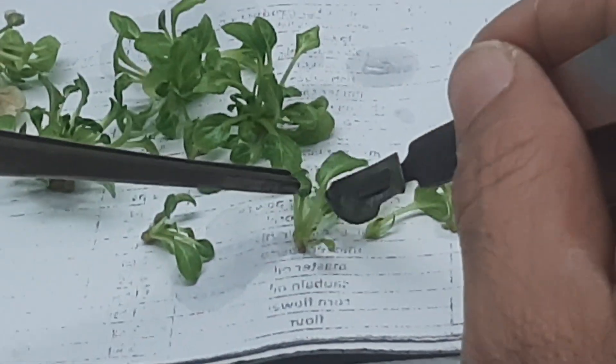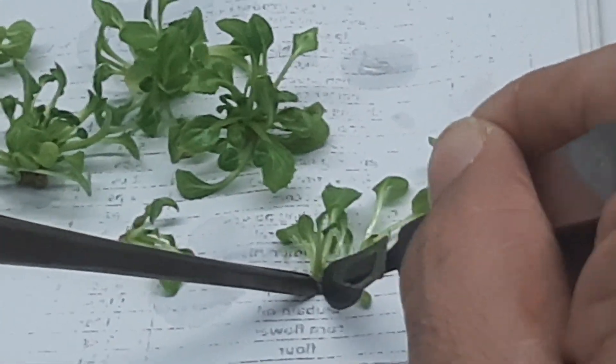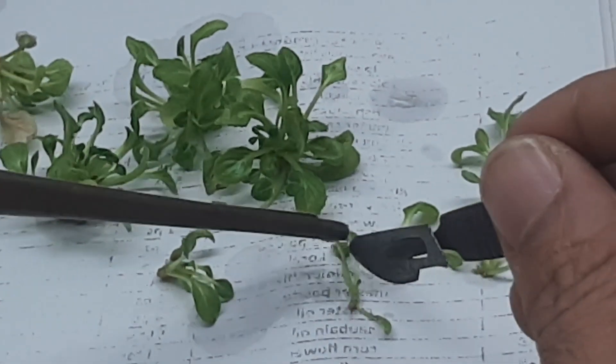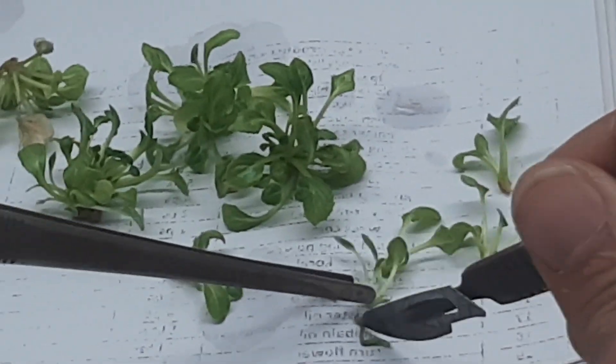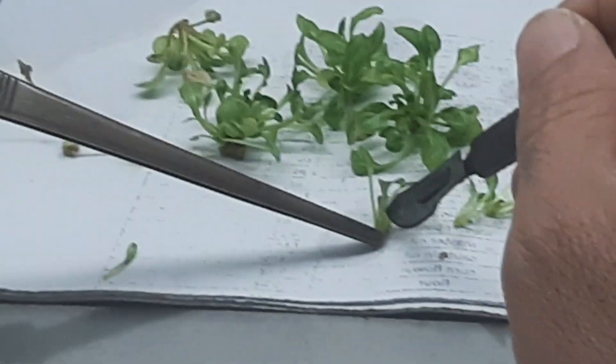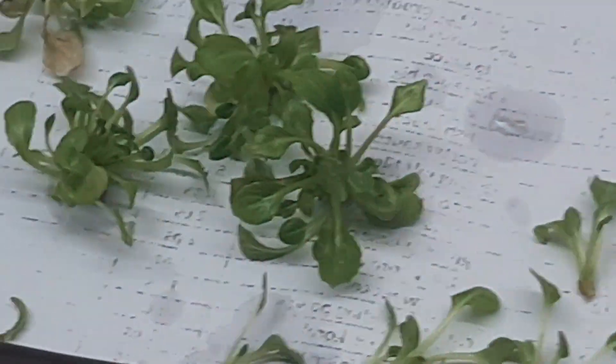This is maybe the third or fourth stage of subculture and all these are Asteria genotypes. I don't know the actual cultivar, the technician who is involved in subculturing knows exactly what the cultivar is.